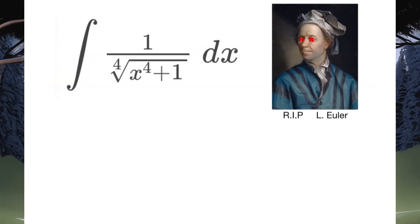Hello there, and welcome back to a brand new video. Today we've got the integral of 1 over the 4th root of x to the power 4 plus 1, dx. Now, rumor has it that Euler actually took one look at this integral, passed out, and then died. So, RIP Euler, you would have loved Chapel Rhone.